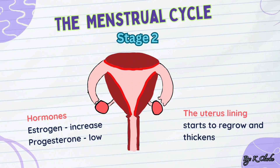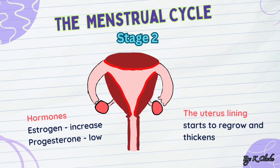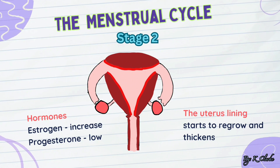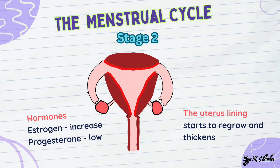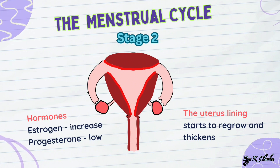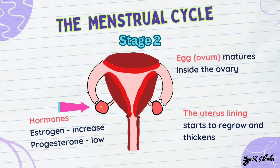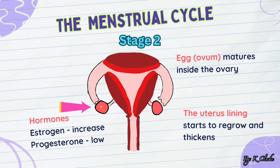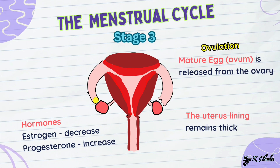Stage two: at this point, progesterone level remains low while estrogen increases. This causes the uterus lining to regrow and the ovum thickens as it prepares for an unfertilized egg. As the uterus lining thickens, an egg, also known as the ovum, matures inside the ovary.